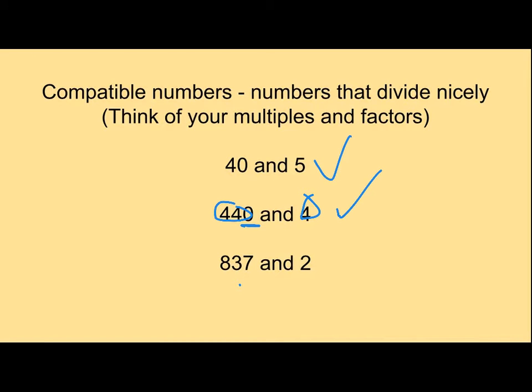Now these numbers, 837 and 2, they are not going to get along nicely because 2 only goes into even numbers. And to help you with this, I've got some tricks to help us remember.